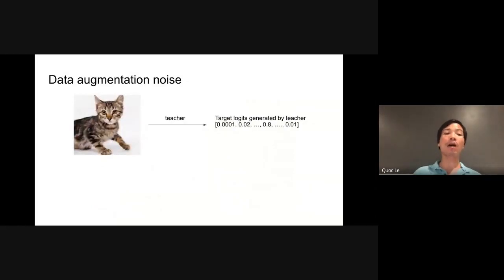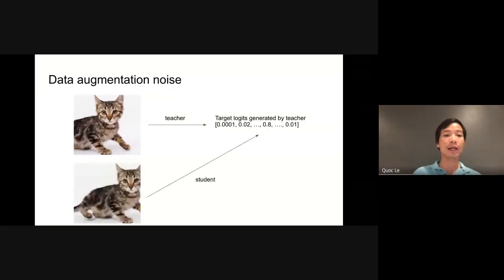One important part of our algorithm is the use of data augmentation. Let's take a closer look at how data augmentation as noise during student training can improve robustness. First, suppose the teacher model generates target logits on the right for the image on the left, where 0.8 indicates the probability of the image being in the cat category. Then, during training of the student, we translate the input image a little bit and give it to the student. The student is forced to produce the same target logits, which are now fixed even though the input image is distorted or translated. This way, the student becomes more robust than the teacher because it sees more variations of the input image than the teacher.